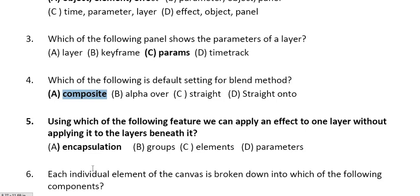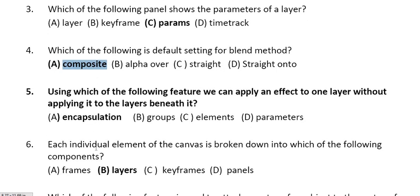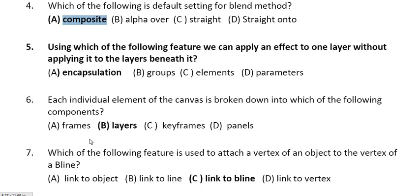Question 5: using which of the following features can we apply an effect to one layer without applying it to the layers beneath it? The answer is Encapsulation. In the previous video, there were three circles from which we applied the gradient effect to only one circle by adding encapsulation to the gradient and that circle which we wanted to give the effect.